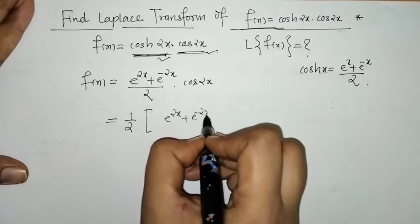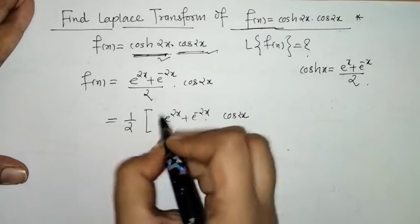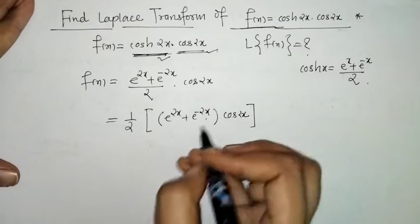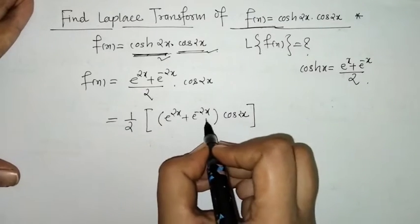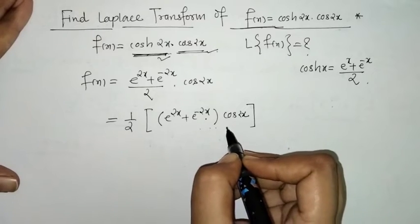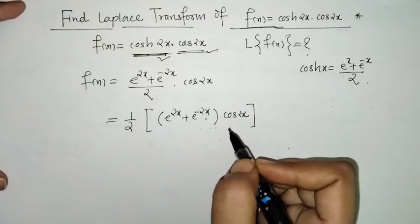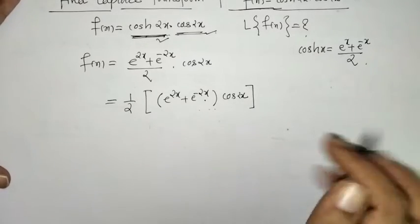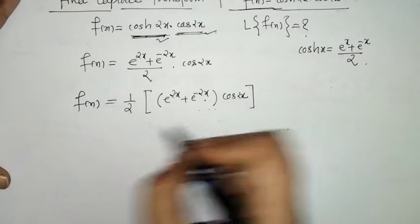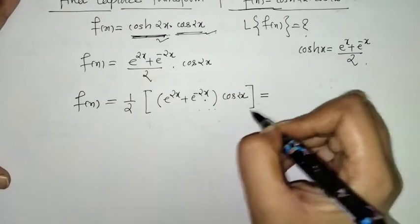We have obtained an exponential times a trigonometric function. We know that when we have multiplication by an exponential function e^(αx), we have to apply the First Shifting Property. So first we will simplify this expression further.